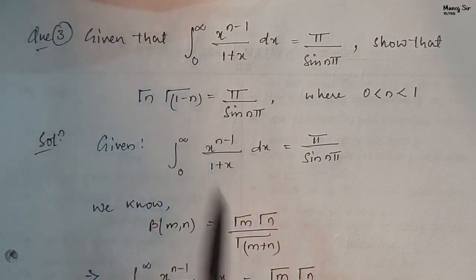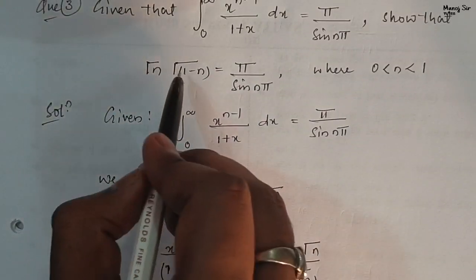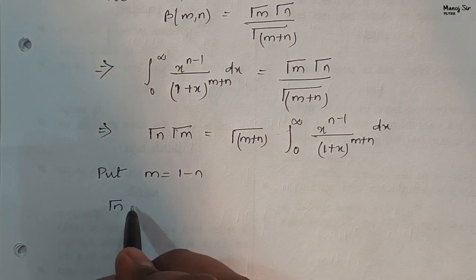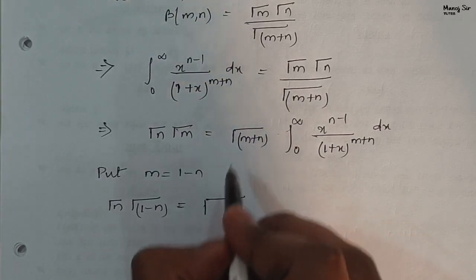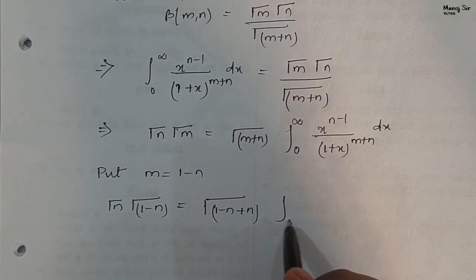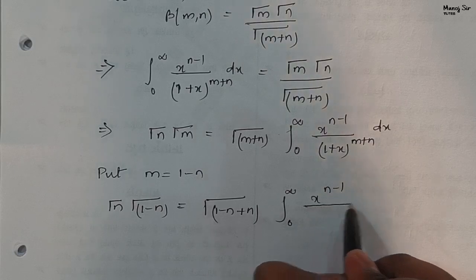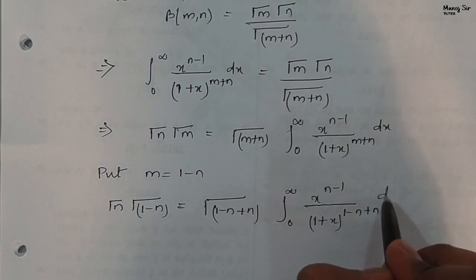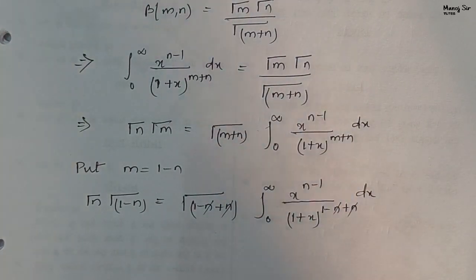Now put m equals 1 minus n, because we need to show gamma(n) gamma(1 minus n). Here we have gamma(n) gamma(m), so if we put m equals 1 minus n we will get the LHS. So, gamma(n) gamma(1 minus n) equals gamma(1 minus n plus n) times the integral, and here n and n get cancelled in the exponent, giving 1 plus x to the power 1.